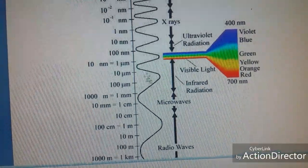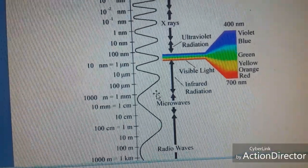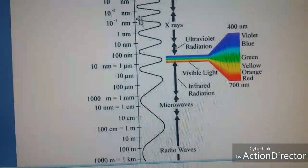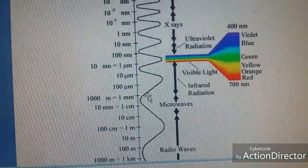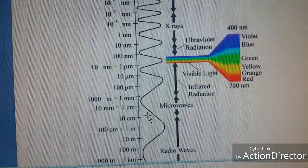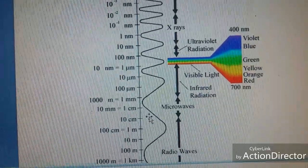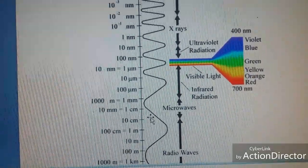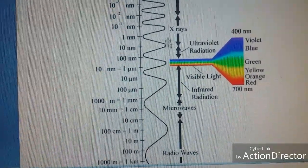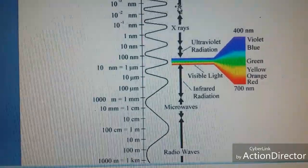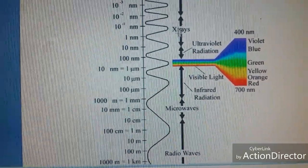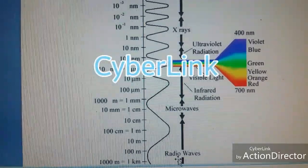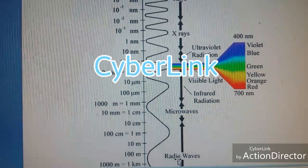How does the electromagnetic spectrum look like? This is the region of high frequency. According to decreasing frequency or increasing wavelength, the electromagnetic waves are arranged starting with cosmic rays, then gamma rays, X-rays, UV, visible, infrared, microwaves, and radio waves.